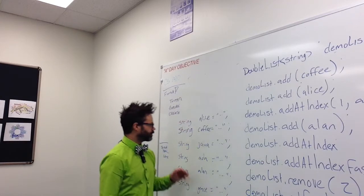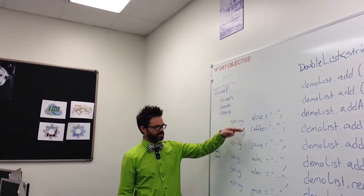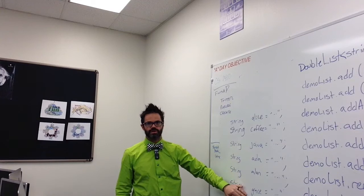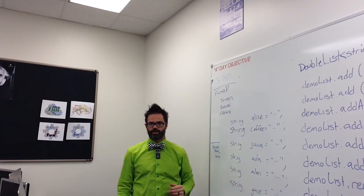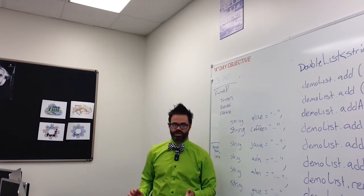We have up here some predefined strings we're going to be using to actually put this together: Alice, Coffee, Java, Ada, Alan, and Grace. These refer to some components that we have seen possibly in computer science.